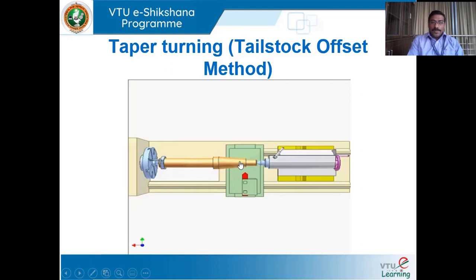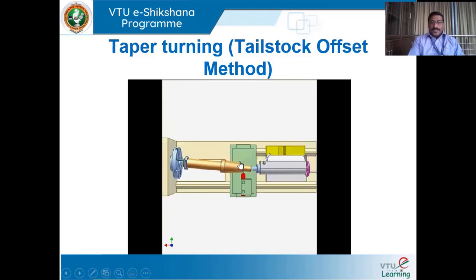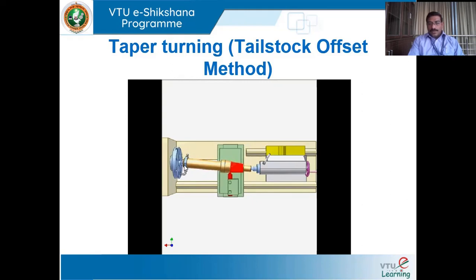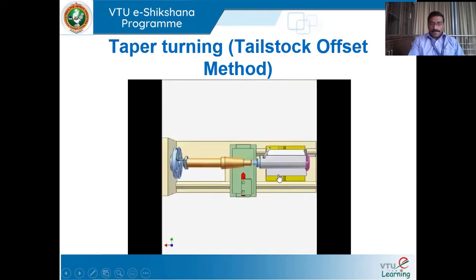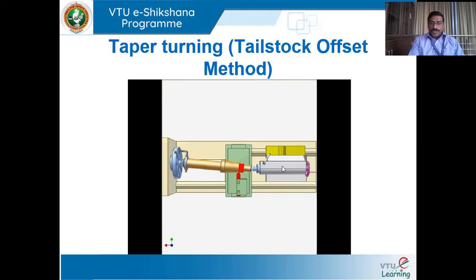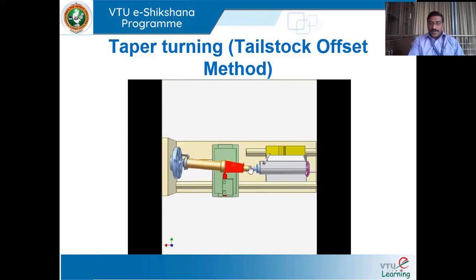You can watch this video wherein taper turning by tailstock offset method is shown. It is an animation. You can see the specimen, a face plate with a lathe dog — which is a work holding device. A chuck or a face plate, both are work holding devices. You can see the taper being generated — there is a shift in the position of the tailstock. The axis of the tailstock is not aligned with the axis of the lathe, creating an offset which produces the required taper.